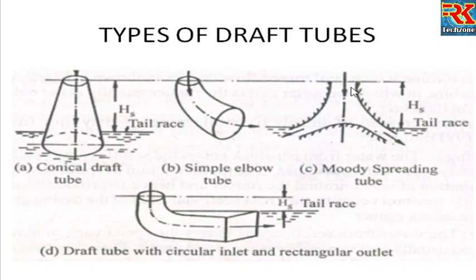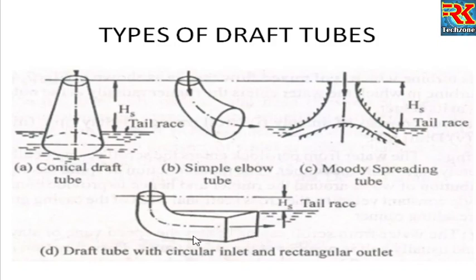The area at the outlet is greater than at the inlet. The fourth type of draft tube has a circular inlet and opens into a rectangular outlet. So the four types are: conical draft tube, simple elbow type, moody spreading type, and the type with circular inlet and rectangular outlet.